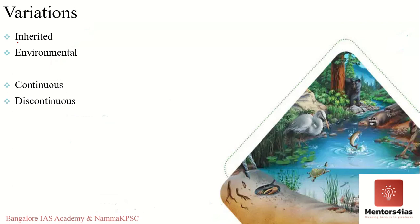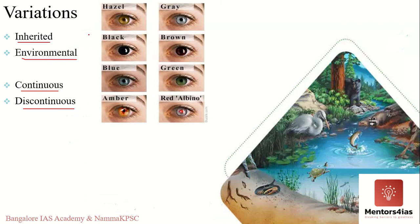Inherited variation occurs when characteristics are a result of genetic information from the parents — for example, eye color, skin color, and hair color. In tropical regions, people need more melanin to protect against ultraviolet radiation, so they generally have darker skin. This is inherited variation.